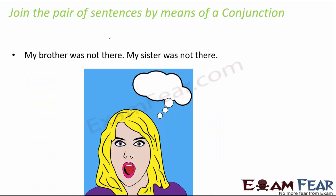'My brother was not there. My sister was not there.' One way of joining them: 'My brother and my sister were not there.' Another way: 'Neither my brother nor my sister was there.'